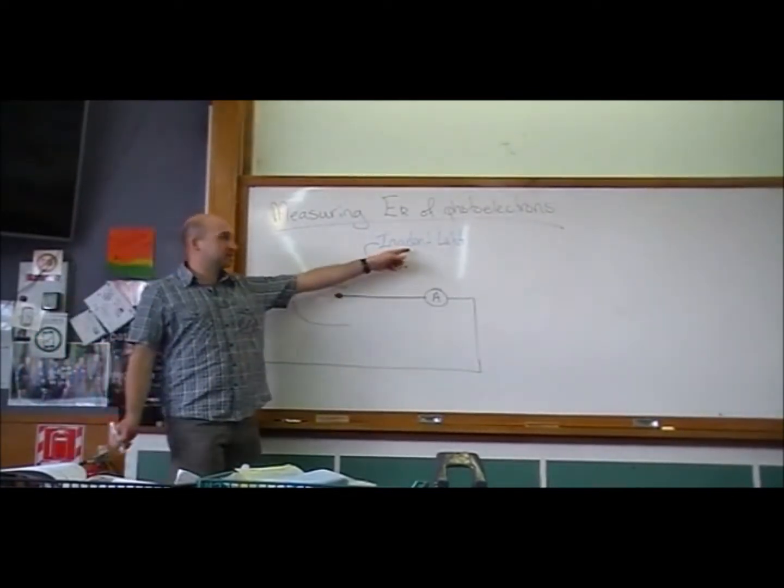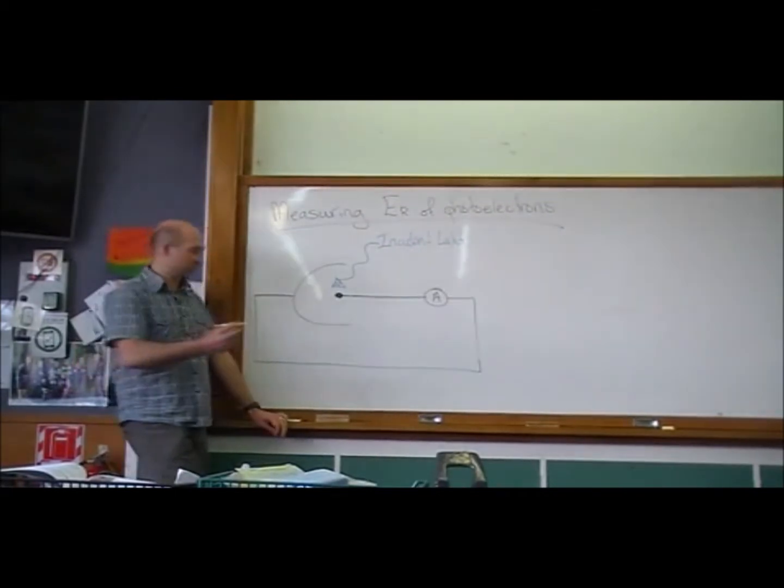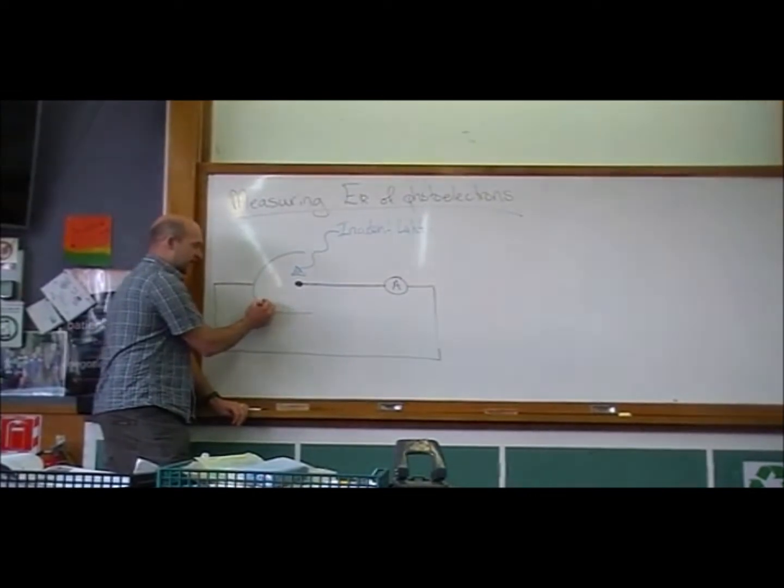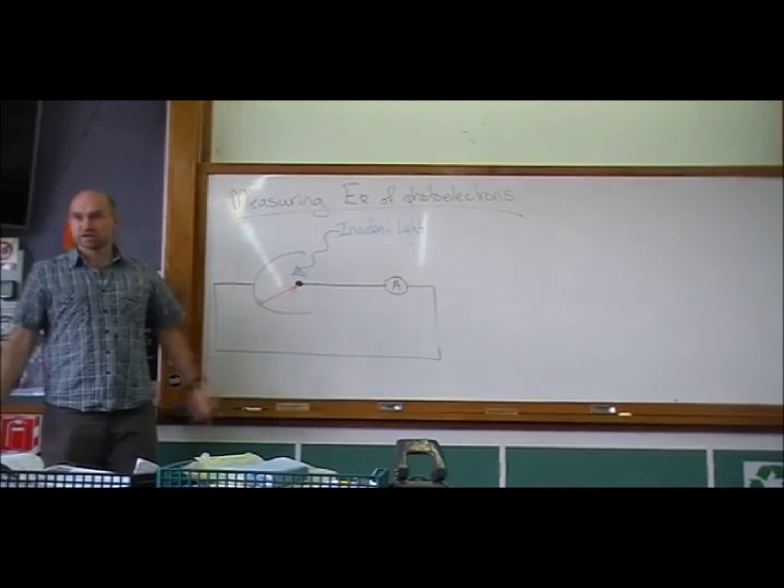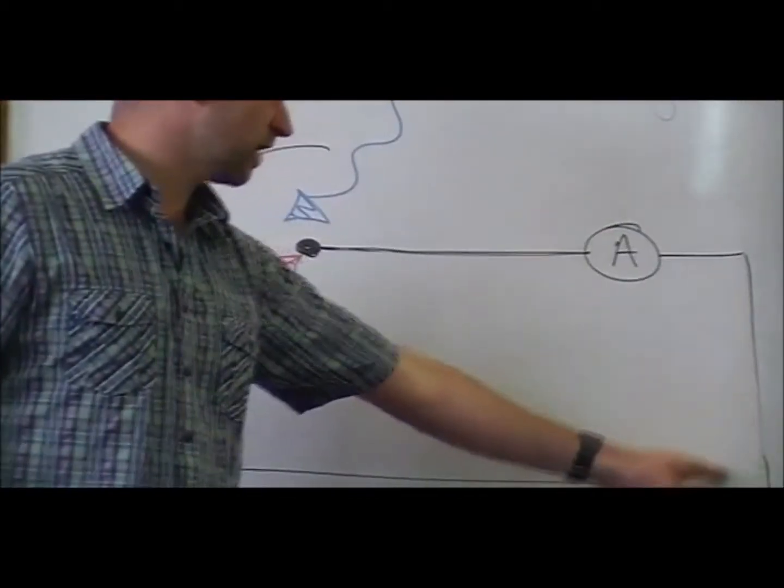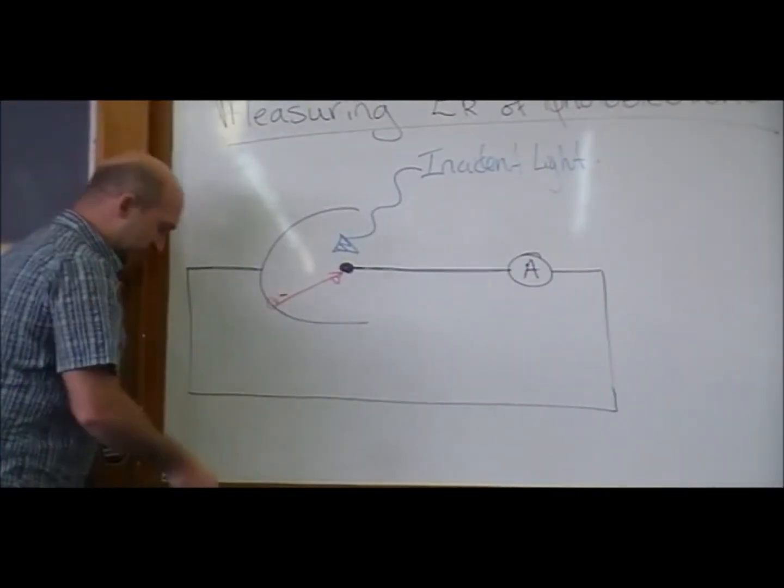So what happens is we shine light in and that light interacts with the metal surface and electrons are released. And if the electron makes it across to the collector plate from the emitter plate, then it's going to zoom around the circuit.